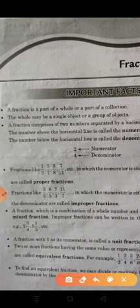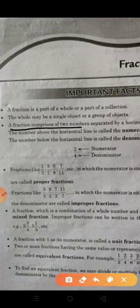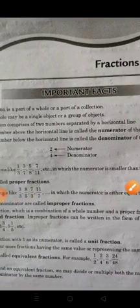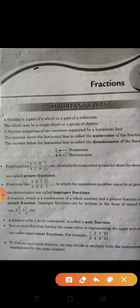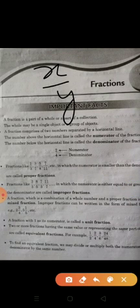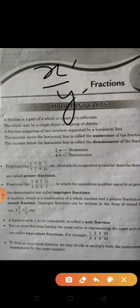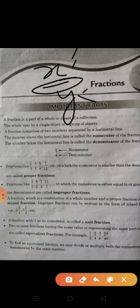Next, a fraction comprises two numbers separated by a horizontal line. The fraction is written as x upon y. So x and y are separated by a horizontal line — this is the separate line. The number above is the numerator and the number below is the denominator.